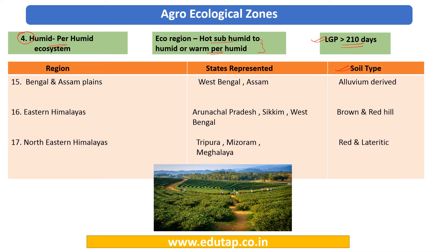The first zone under the humid per-humid ecosystem is the Bengal and Assam Plains — this is Zone 15. It broadly consists of the states of West Bengal and Assam. The dominant soil here is alluvium-derived, which is the most fertile soil, brought over by rivers.